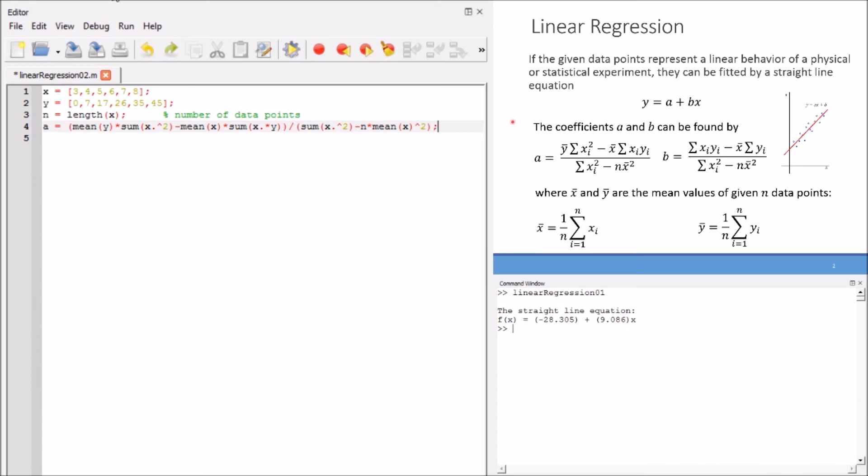Here we see that a is mean y. This is the mean y function multiplied by sum of x squares. Here we should notice something important. We use the dot power operator of MATLAB because here we want to raise every single element to the power 2. This is an element-wise operation. Every element individually in the array x should be raised to the power 2. That's why we use dot power operator here.